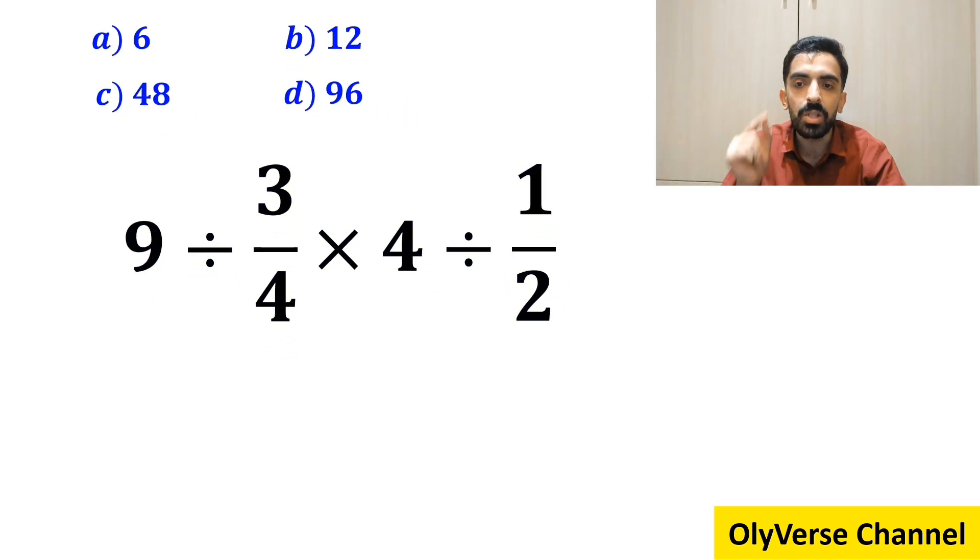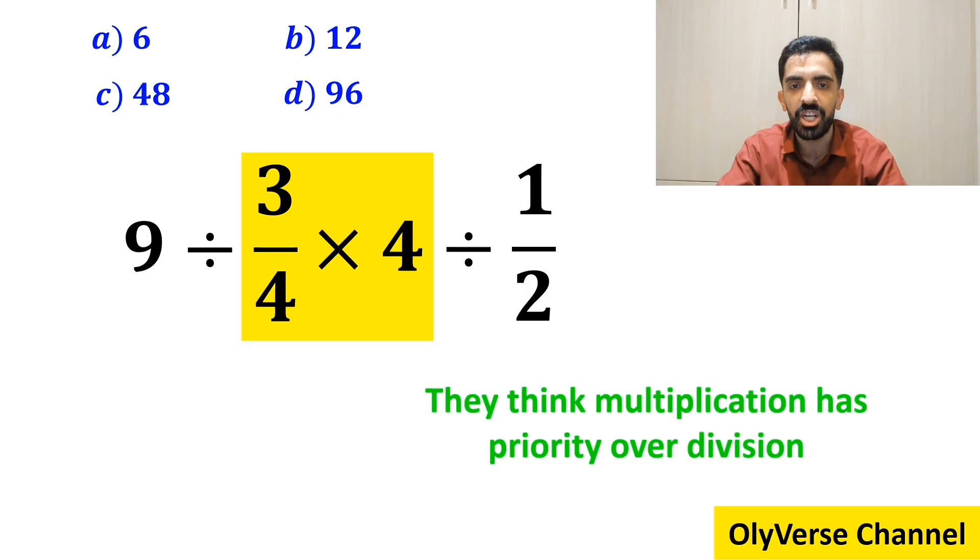Let's take a closer look and solve it together. In the first step, many people go straight to the expression 3 over 4 times 4, because they think multiplication has priority over division. And they tend to cancel out the 4's.